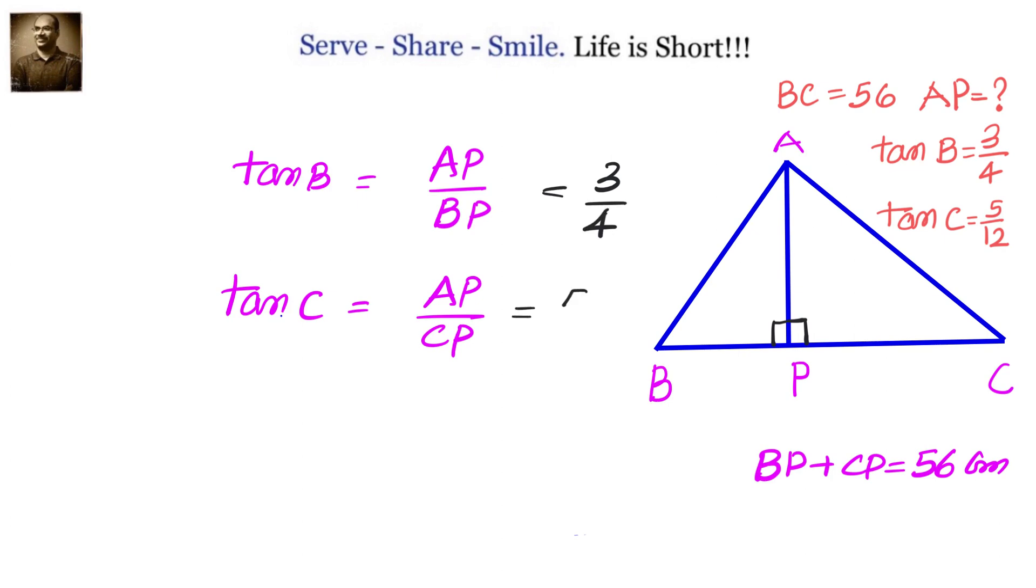AP value is not equal in both of them, so multiply this with 5 and multiply this with 3 to make the numerators equal. They will become 15 by 20 and 15 by 36. That means if this is 15, then this is 20 and this is 36.